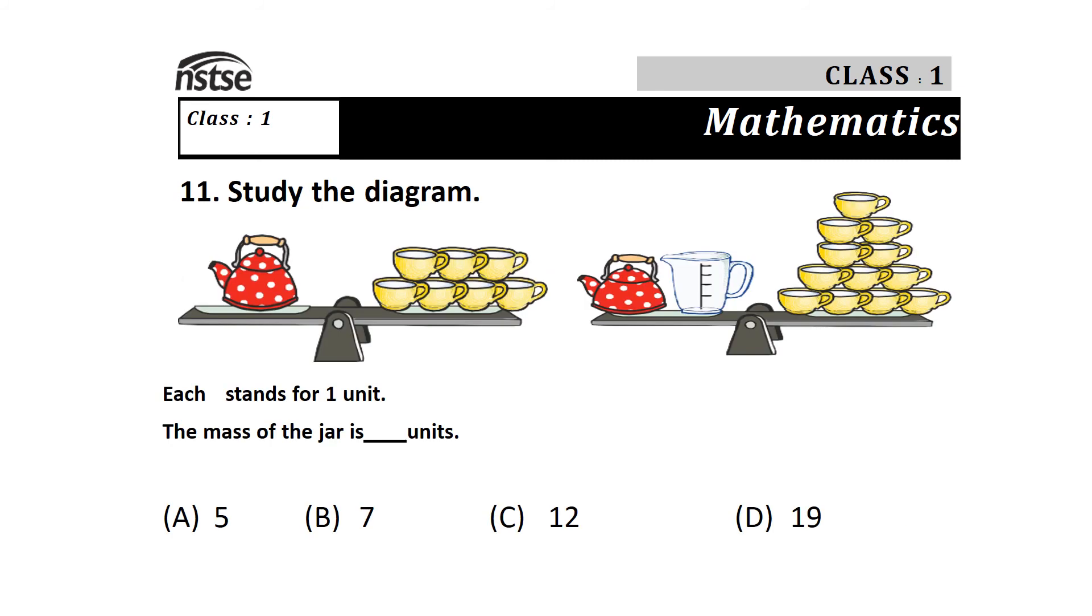Question 11: Study the diagram where each stands for one unit. The mass of the jar is how many units? Options are A) 5, B) 7, C) 12, and D) 19. It is given that 7 cups equal a kettle. In the next picture, they add 5 cups and 1 jar to make the balance, so 5 more cups equal 1 jug. The answer is option A) 5.